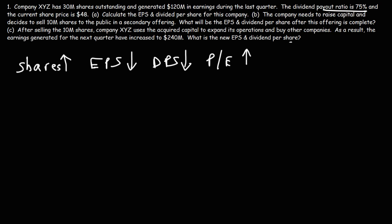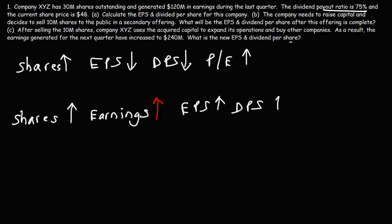Sometimes, as we've seen in Part C, a share dilution may not always be a bad thing — it could be a good thing. If shares go up but a company increases earnings by a greater proportion than the increase in shares, then the EPS could go up, the DPS will go up as well, and the price to earnings ratio will go down, making the company more undervalued. A share dilution is good for investors if the company can grow earnings at a much greater proportion than the increase in shares; if earnings don't go up and the company dilutes its shares, that's bad for investors.